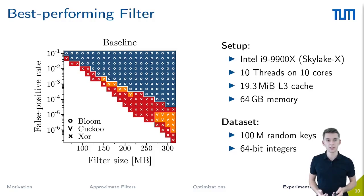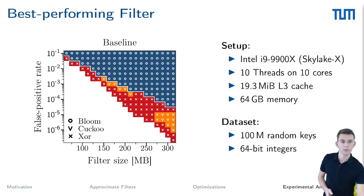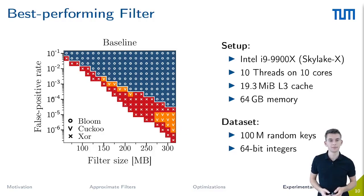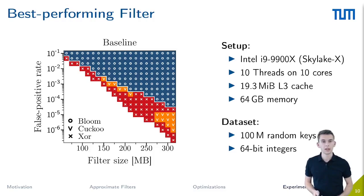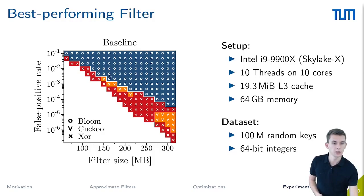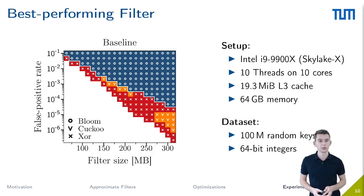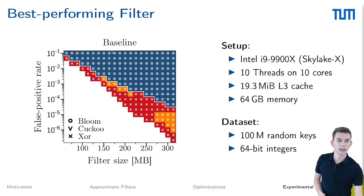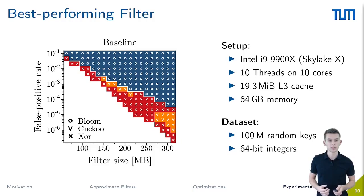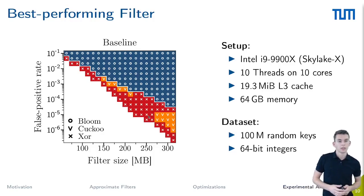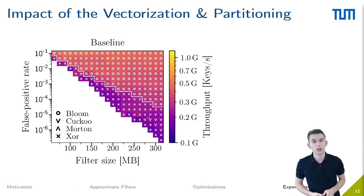First, we look into the best performing filter without the two optimizations. On the y-axis of the figure on the left side, you can see the exponentially decreasing false positive rate. On the x-axis, the space used by the filter is shown. The white line divides the area where Bloom and fingerprint filters perform best. Bloom filters fill the upper right blue area where high false positive rates and large filter sizes are acceptable — here the fast register-sized and sectorized variants offer the best performance. Beneath the white line, the fingerprint filters dominate, as only the original Bloom filter with multiple cache misses can achieve those low false positive rates.